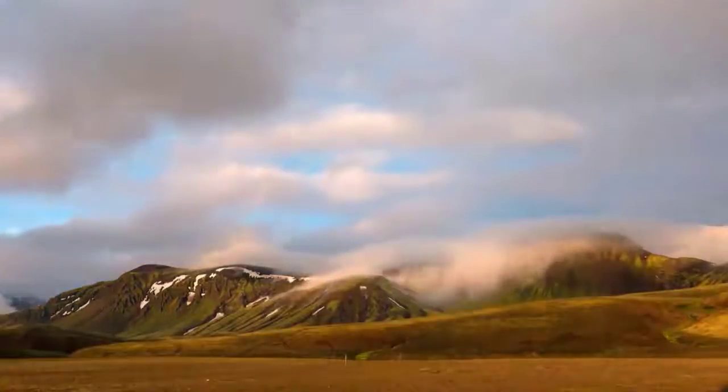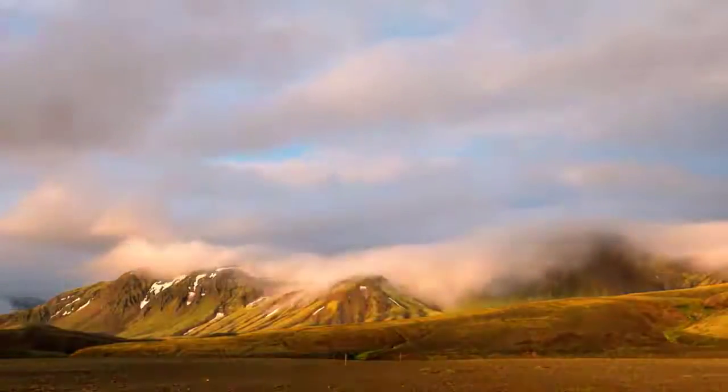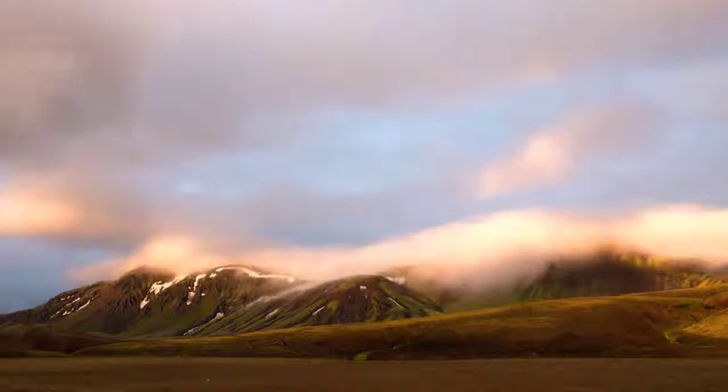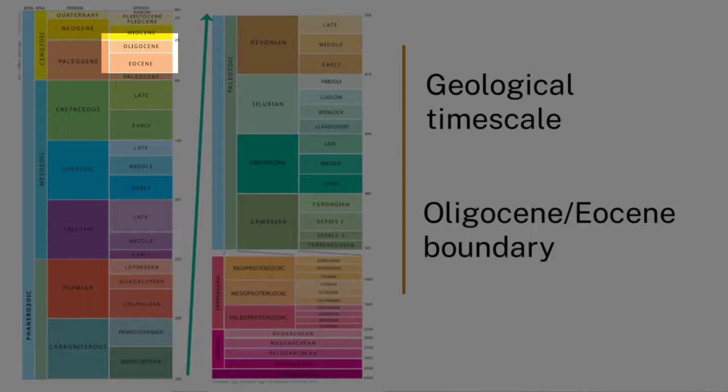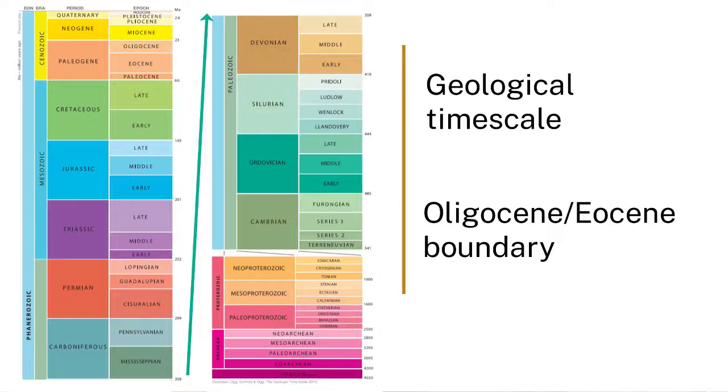So if we go back to 40 million years ago, this for those of you that are stratigraphers in the class, this is the boundary between the Oligocene and the Eocene. This is when Antarctica was first glaciated.